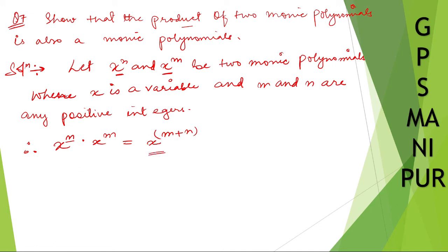Okay, so if you look here carefully, x to the power m plus n, it is also a monic because the coefficient is one. If the coefficient, the number here, is one, then it is monic. So therefore, x to the power m plus n is also a monic polynomial.